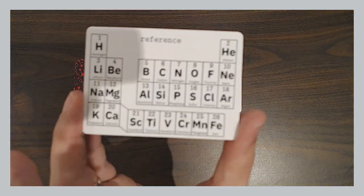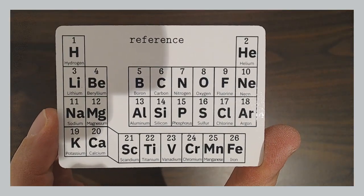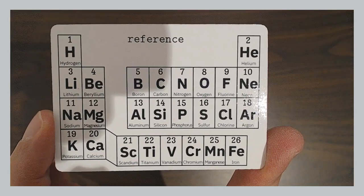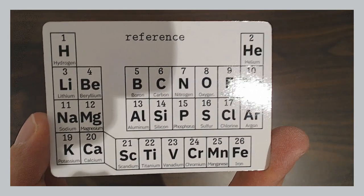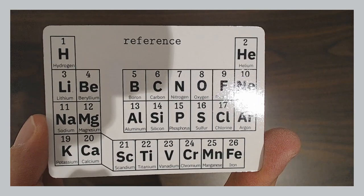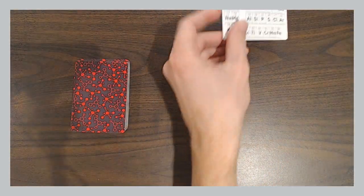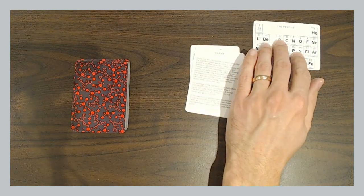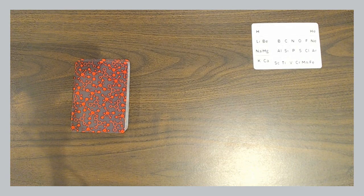Every card in this deck represents an element of the periodic table, and the cards go up to aluminum, element 13. But the different games you can play that are described in the rules go all the way up to iron, element 26. So this little mini periodic table can be used as a reference as you play the games.